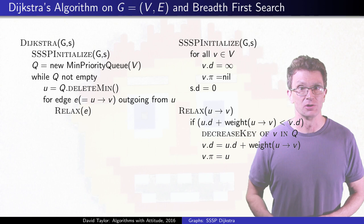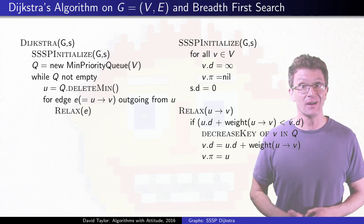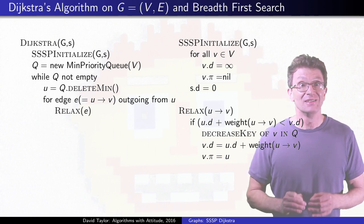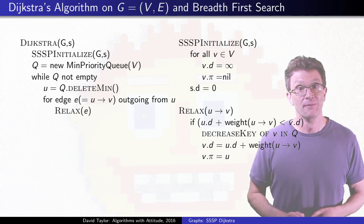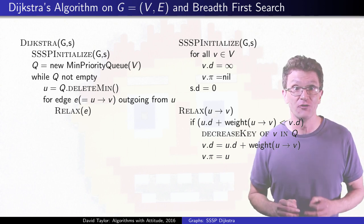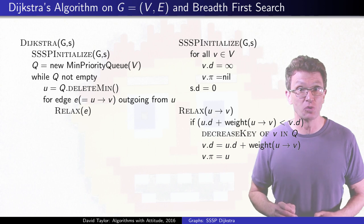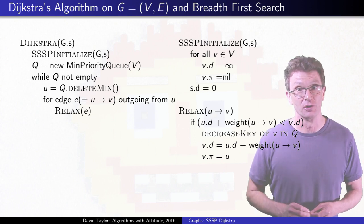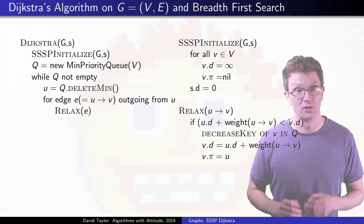Two quick points to mention. First, if you look at that code, you should see just how similar it is to breadth first search. If the priority queue was a first in first out queue, and the edge weights were all one, it is breadth first search. Dijkstra's is just a generalization.